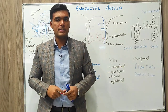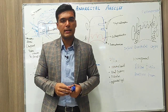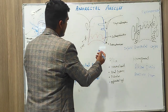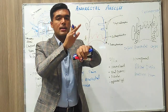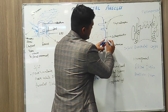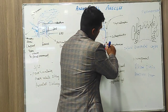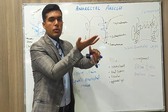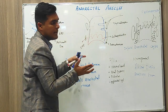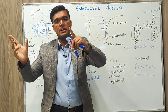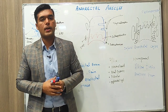When we see anorectal abscesses, at which areas do we have the most chances of forming these abscesses? In this diagram, we have the same internal and external anal sphincters and pectinate line. Between the internal and external anal sphincter, we have an intrasphincteric abscess. We also have subcutaneous abscesses on the lower skin side, deep abscesses, and in the supraelevator area, we have supraelevator abscesses.